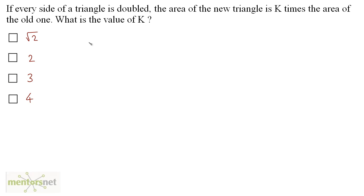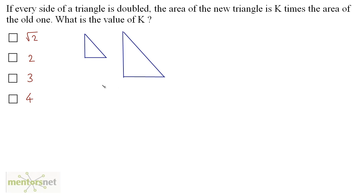If every side of a triangle is doubled, the area of the new triangle is k times the area of the old one. What is the value of k? For simplicity, let us consider a right angle triangle with base B and height H. Doubling every side gives base 2B and height 2H.